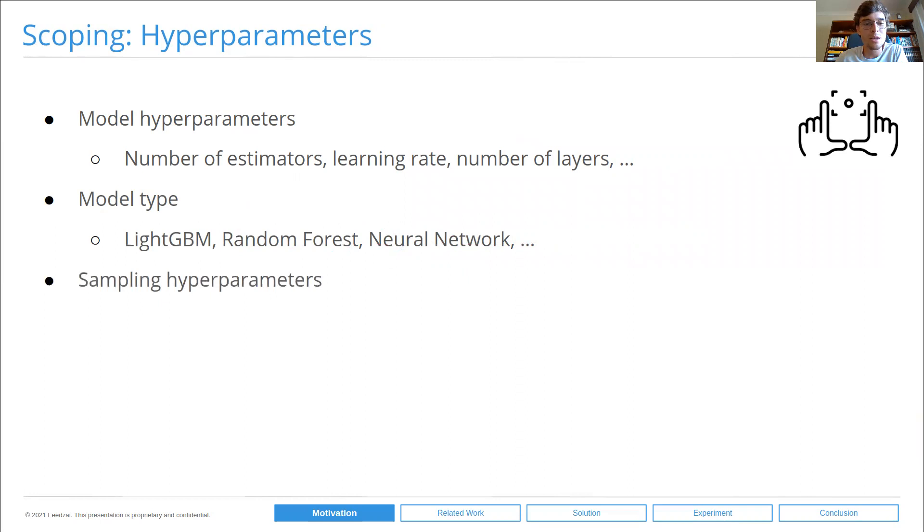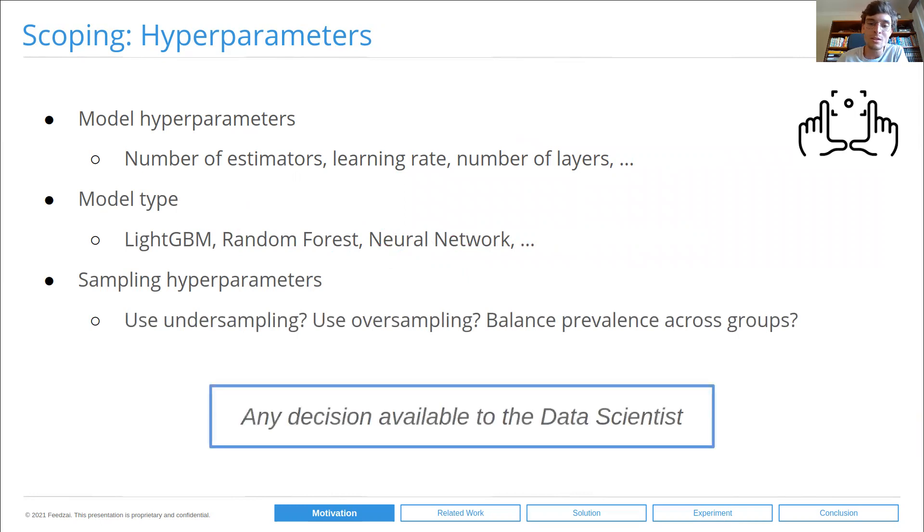And also, there are sampling hyperparameters. For instance, whether we want to use undersampling, oversampling and to each degree, these are all hyperparameters. These are all decisions available to the data scientists. All of these decisions will influence the end performance of the model, the end predictive accuracy of the model. But importantly, they will also influence the model's fairness. Bias can be introduced by any of these decisions. And this is the space that we're acting on.